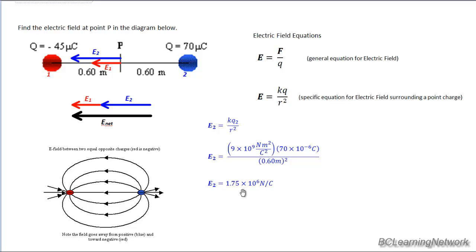Let's do a similar analysis now for the red E1 vector. So identical equations, the only thing that changes in this case is the value of the charge, which is 45 microcoulombs, or 45 times 10 to the negative 6. And in this case, you get a smaller value for the electric field as expected. E1 is 1.125 times 10 to the 6 newtons per coulomb.